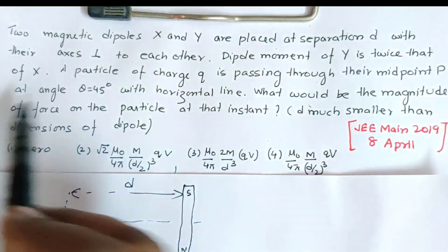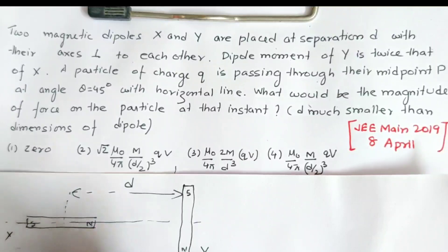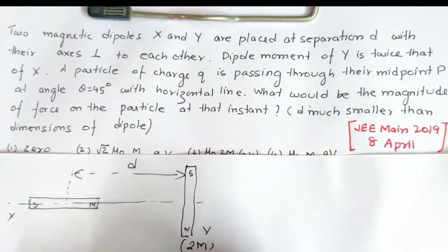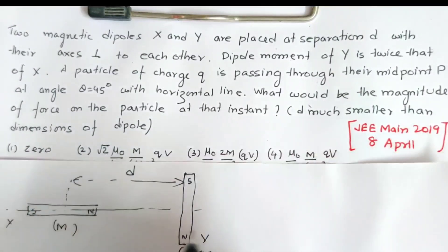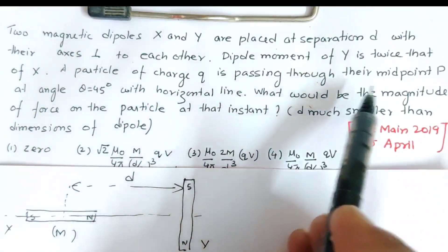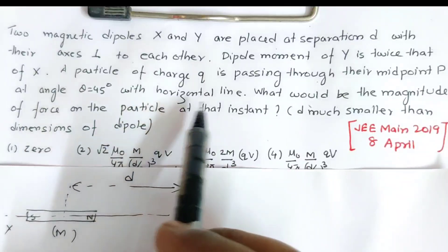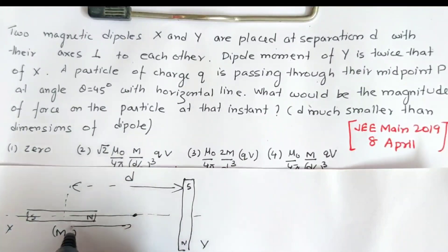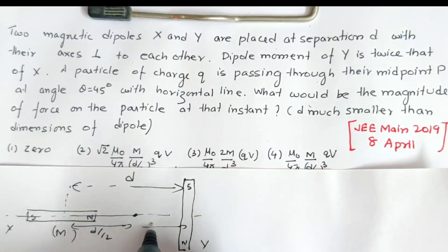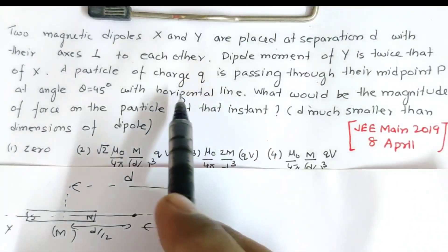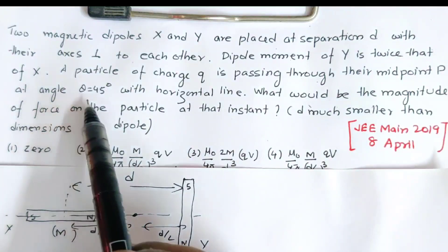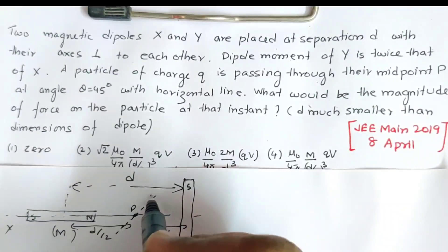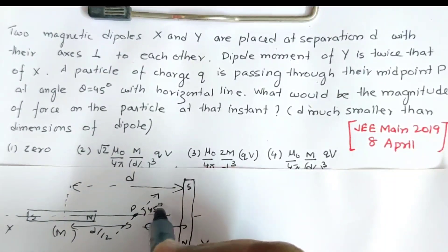The dipole moment of Y is twice that of X. So this is Y and this is X — dipole moment of Y is 2M and this is M. A particle of charge Q is passing through their midpoint P at angle theta equal to 45 degrees with the horizontal line. P is the midpoint, so total distance is D, meaning this distance is D/2 and this is also D/2. The particle is passing through point P at 45 degrees, going in this direction.